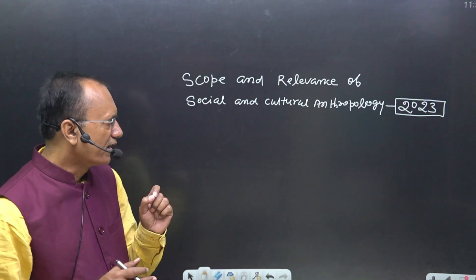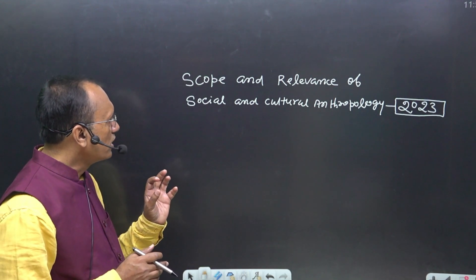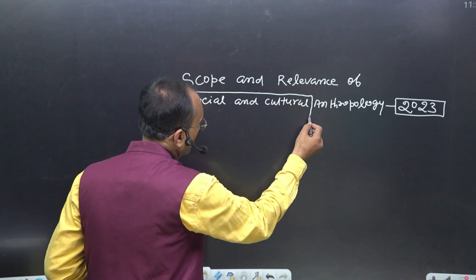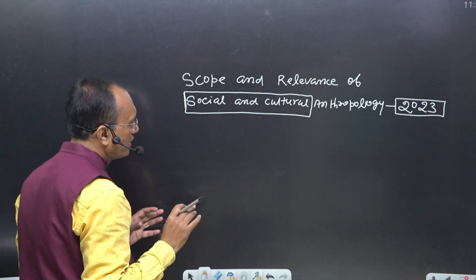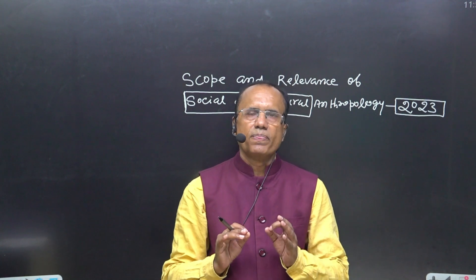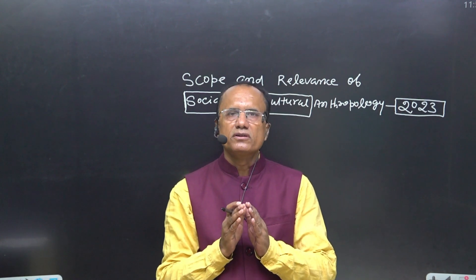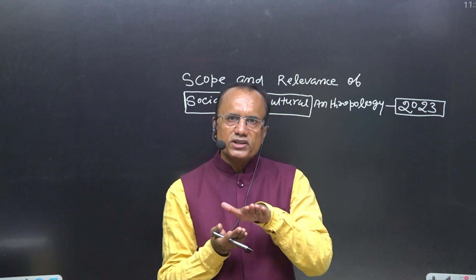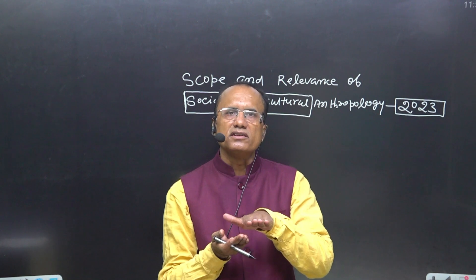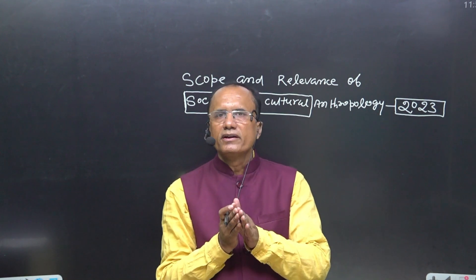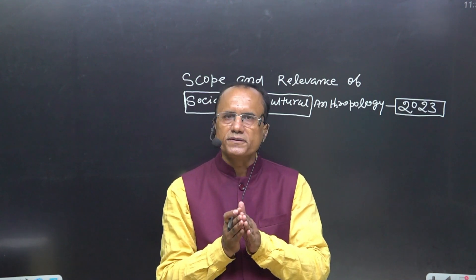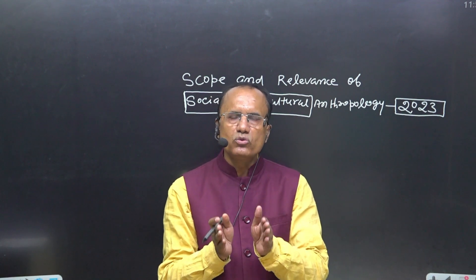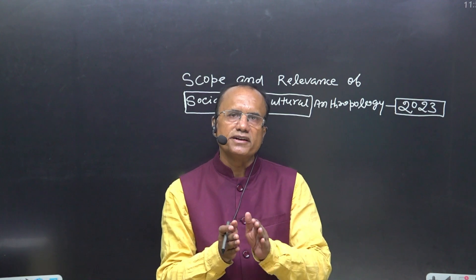In topic 1.3, we have to learn the branches of Anthropology, and there is one branch called socio-cultural Anthropology. But this question uses the terms social Anthropology and cultural Anthropology separately. So you should define what is social Anthropology and what is cultural Anthropology, explain how they are interrelated, what are the differences between them, and then explain their scope and relevance.